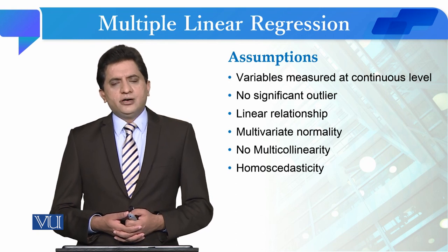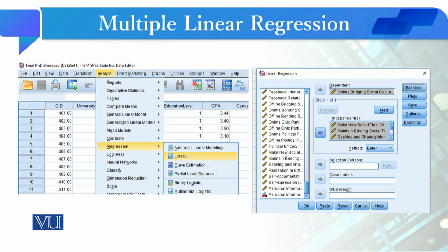If we talk about the procedure in SPSS, in the data set we have independent variables to use social media. This means online self-disclosure, making new social ties, maintaining existing social ties, seeking and sharing information.